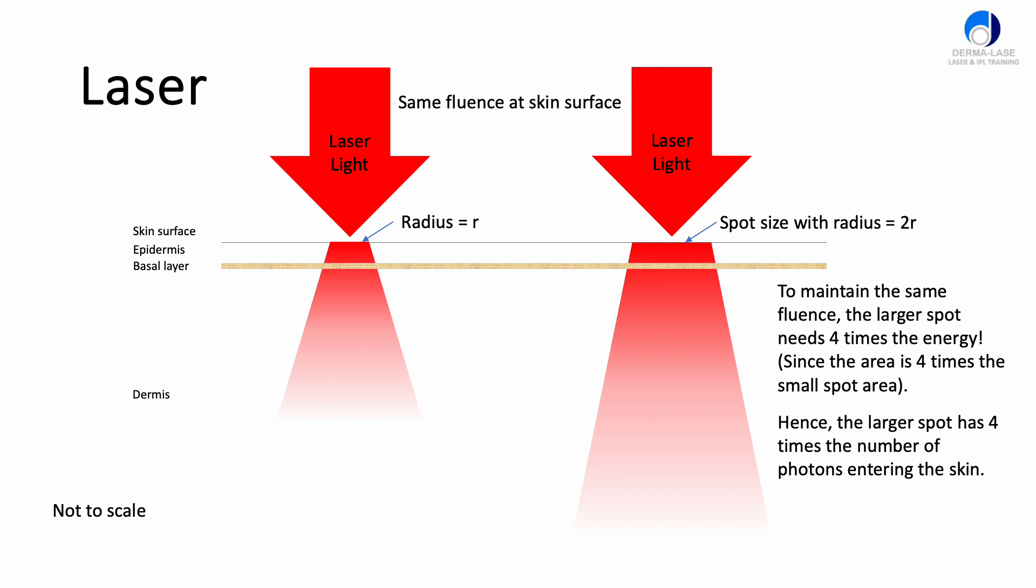Therefore, the bigger spot on the right hand side must have 4 times the number of photons entering the skin. If we've increased the energy from the laser by a factor of 4, that means there are 4 times the number of photons too. Because we've got all those extra photons, a lot of them can penetrate deeper into the skin.